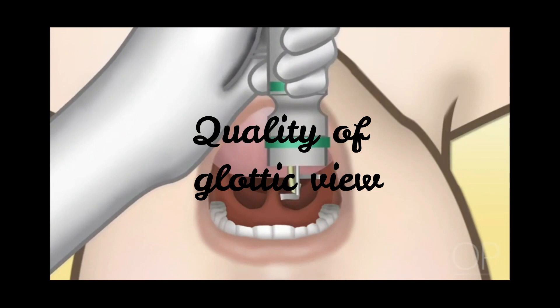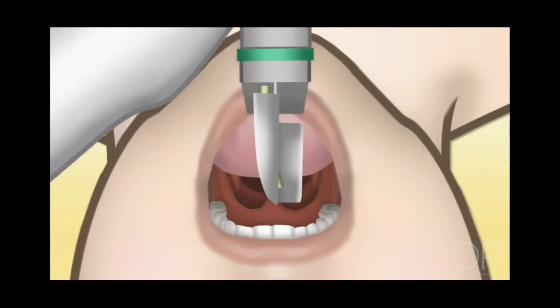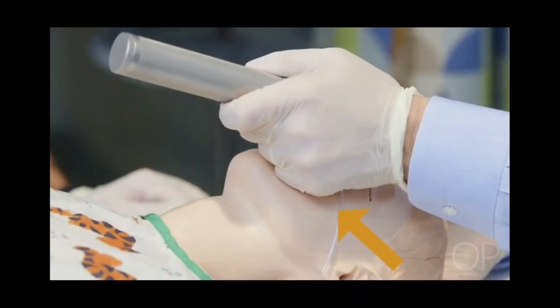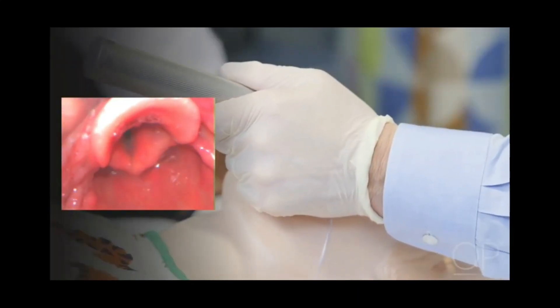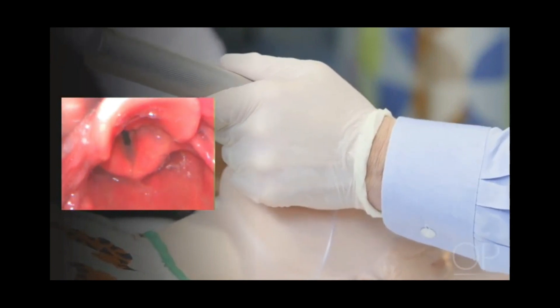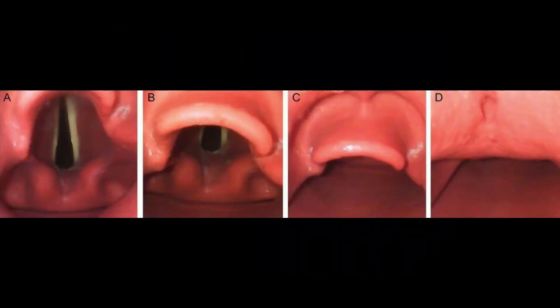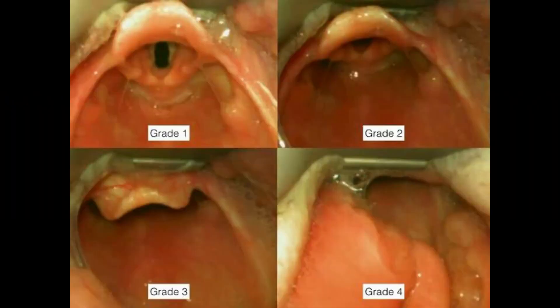Assessment for quality of glottic viewing during laryngoscopy: Awake direct laryngoscopy can be done with adequate sedation and topicalization of the tongue and pharynx to estimate the forthcoming laryngoscopy and intubation. There are 4 grades of Cormack-Lehane grading: Grade 1 when the entire vocal cords are visible; Grade 2 when the posterior parts of the laryngeal aperture are visible; Grade 3 when only the epiglottis is visible; and Grade 4 when none of the glottic structures are visible.